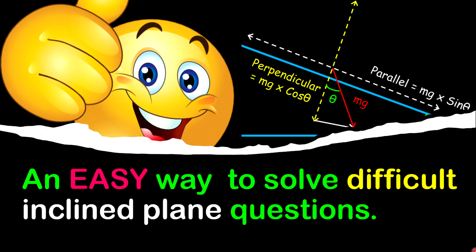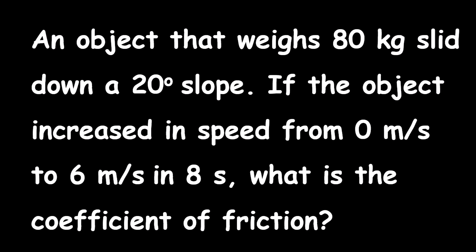Good day everyone, or good night, depending on where you are. Today I'm going to walk you through how to solve difficult inclined plane questions. The question of focus for today is that an object that weighs 80 kilograms slid down a 20 degree slope. If the object increased in speed from 0 meters per second to 6 meters per second in 8 seconds, what is the coefficient of friction?